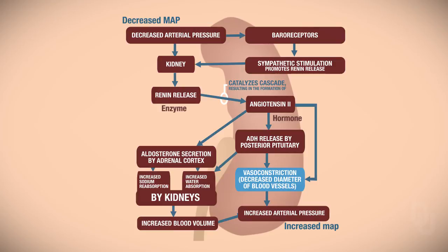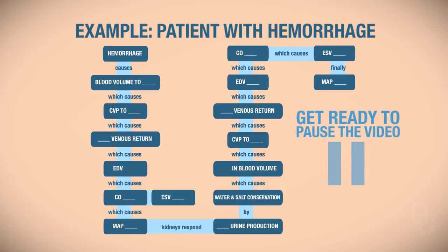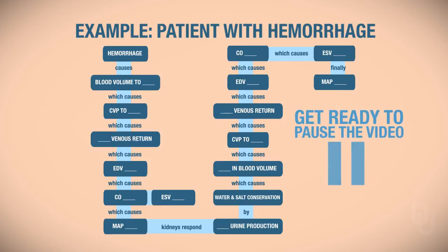Let's take an example and put it all together. I would like you to pause the video and use up or down arrows to indicate whether each level would go up or go down based on a patient that has hemorrhaged. A hemorrhaged patient has lost a large amount of blood. Pause the video, fill it out, and when you're ready, replay the video to check your answers.